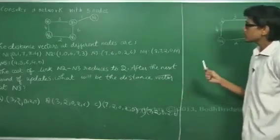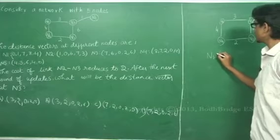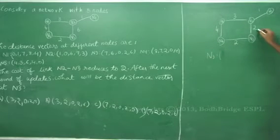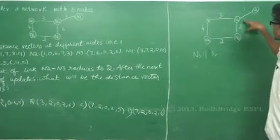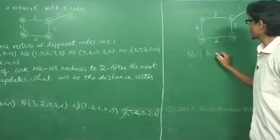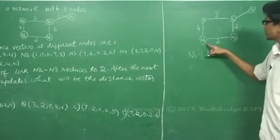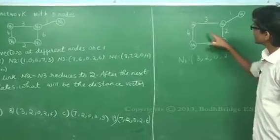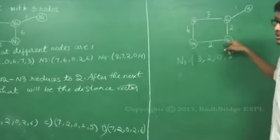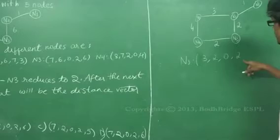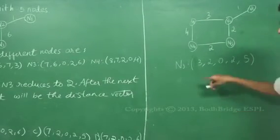Now we find the new distance vector at N3. N3 to N1: best distance is 2+1=3. N3 to N2 is 2. N3 to itself is 0. N3 to N4 is 2. N3 to N5: there are two paths — via N2 it is 3+2=5, and via N4 it is 2+4=6. So 5 is the lowest value, meaning the distance from N3 to N5 is 5. This is the distance vector at the next round of updates.